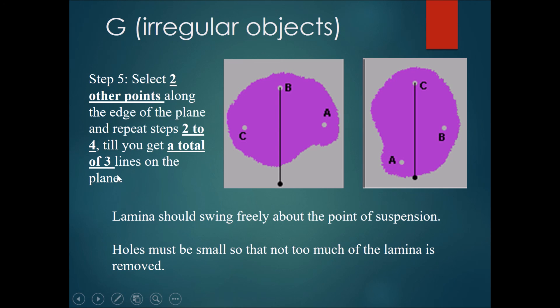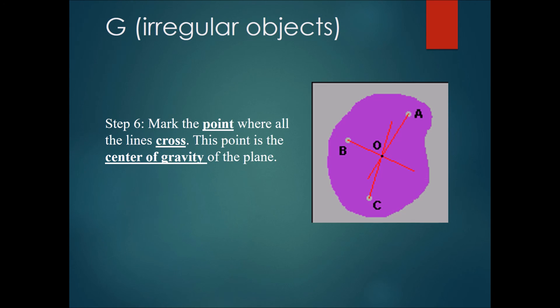The second line is to get the point, the third line is to confirm. Step six is to mark the point where all three of the lines cross because if you did it correctly, if you let them swing completely freely, all three of the lines should meet at one point and this point will be confirmed as the center of gravity of the plane.